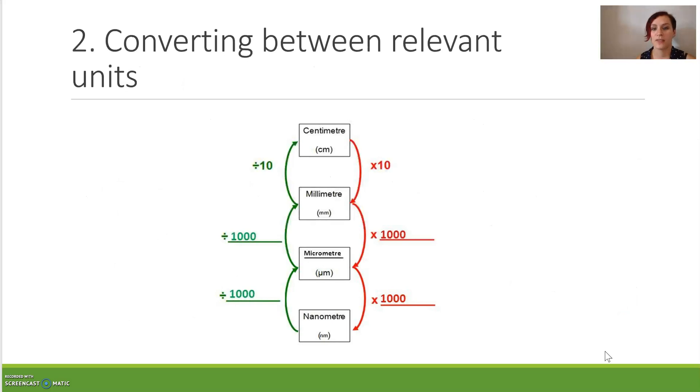Our next skill, we are converting between relevant units. Now we're looking at really tiny units here. Even though we're used to working with centimeters and millimeters, we now have to convert to micrometers or micrometers and nanometers. You can see that the scale there is a thousand times smaller. So there are 1000 micrometers in a millimeter and 1000 nanometers in one micrometer.